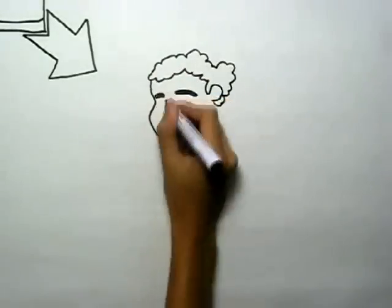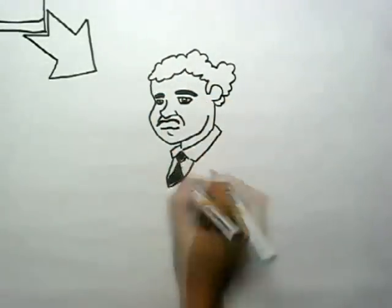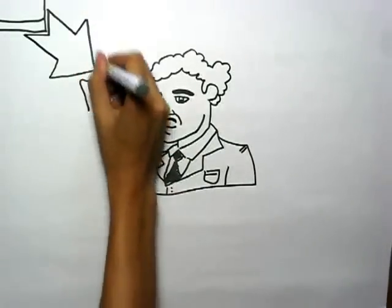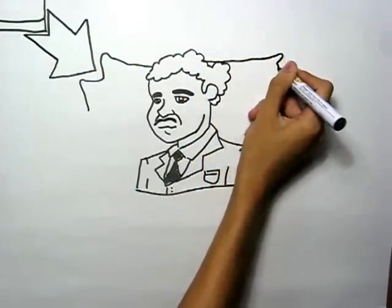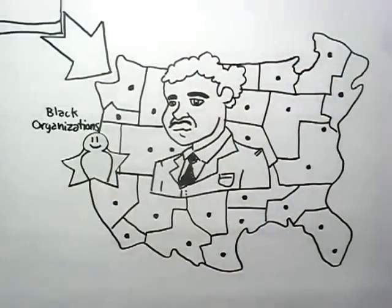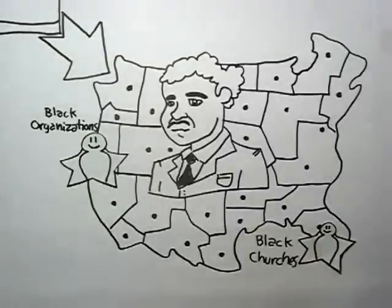This chart to me represents beautiful, educated, moneyed black people all over America. It could represent black organizations, it could represent black churches, it could represent black social and civic organizations.